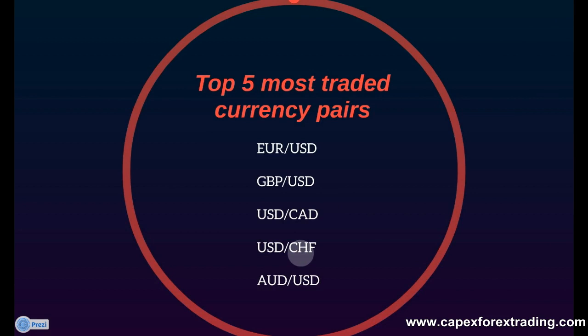Now bearing this in mind, there is also a list of the top five most traded currency pairs. They are the EUR/USD, the GBP/USD, the USD/CAD, the USD/Swiss franc, and the Aussie dollar against USD. There are also many other currency pairs available to trade, but these are the top five most traded currency pairs in terms of volume.